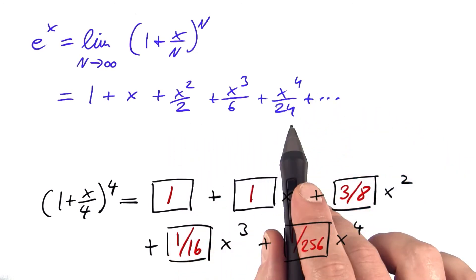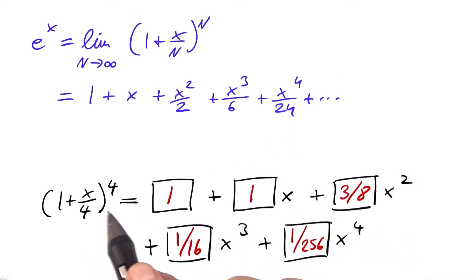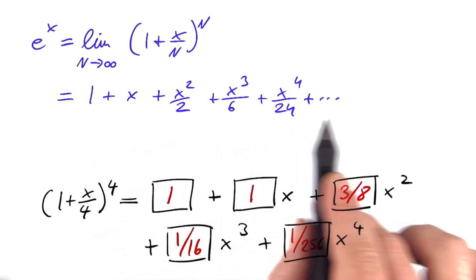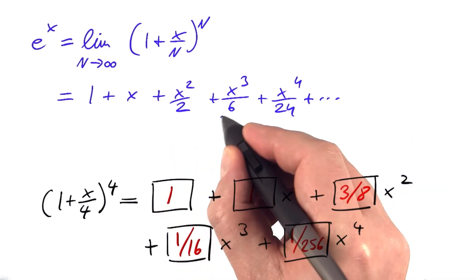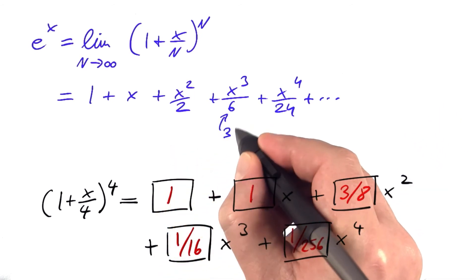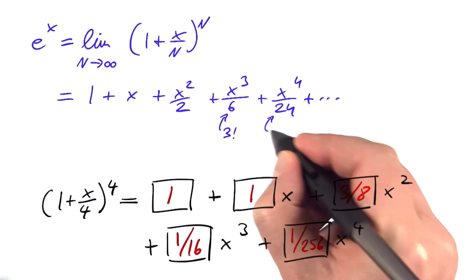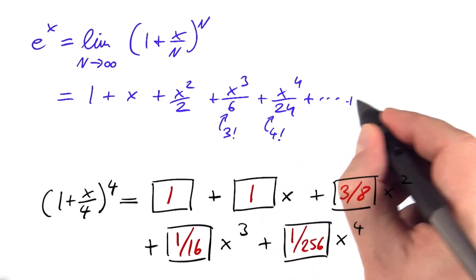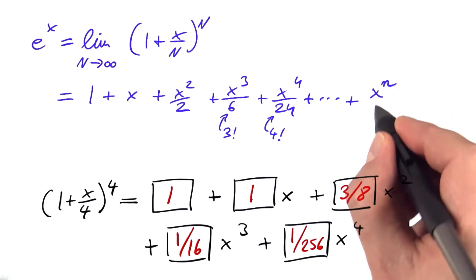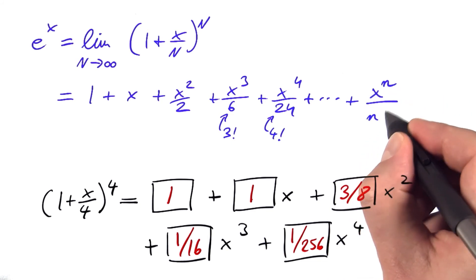To prove this, you need a better method than we have used here. You need binomial coefficients. But hopefully, you get the idea where this power series comes from. And actually, it turns out that this 6 is the factorial of 3, this 24 is the factorial of 4, and so on. So the general term would be x^n divided by n factorial.